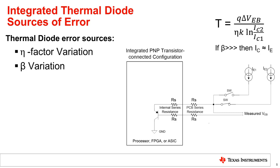Beta is the current gain of the BJT. When beta is large, the difference between the emitter current and the collector current is negligible. As processor geometries decrease, the beta of the BJTs also typically decreases. As beta approaches one, the difference between the collector current and emitter current is no longer negligible, which can start to cause errors in the temperature measurement. Some remote sensors have automatic beta compensation to account for substrates with low beta values.